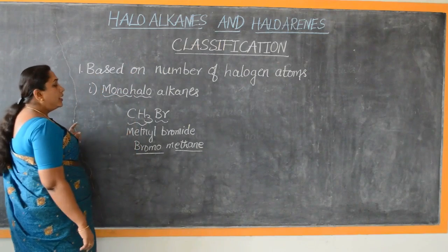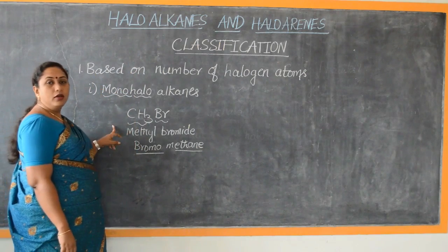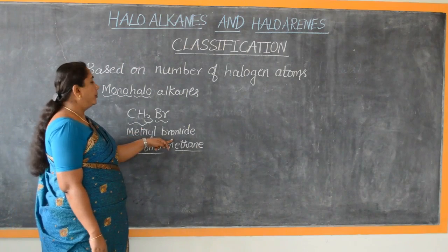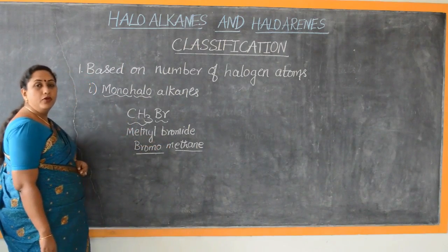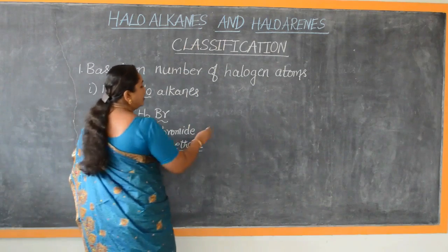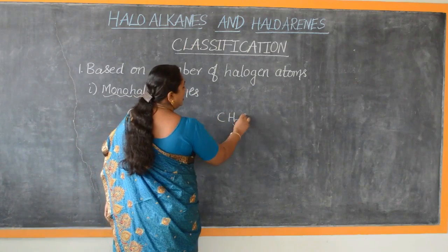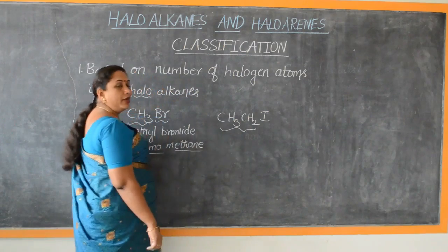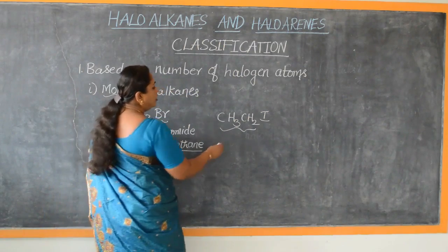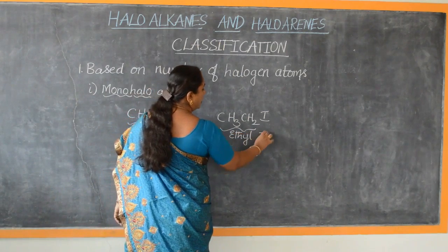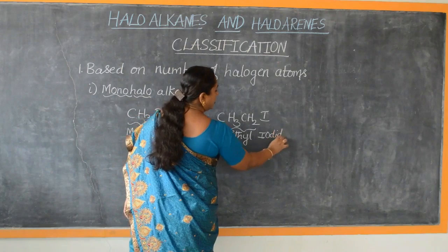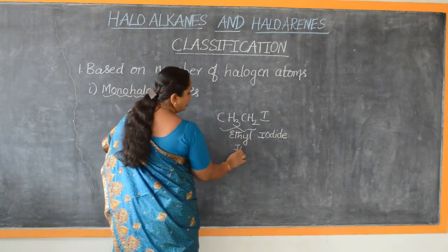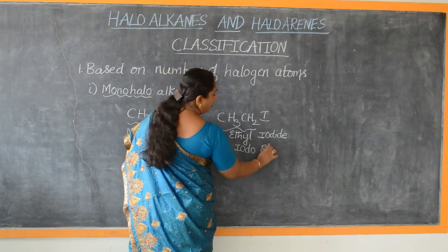In trivial nomenclature, it follows the rule as alkyl halide — first you write the alkyl group and then the name of the halide group. This is an example of a mono-haloalkane. Similarly, CH3-CH2-I: CH3-CH2 is C2H5, the ethyl group. So the trivial name is ethyl iodide, and its IUPAC nomenclature is iodoethane.